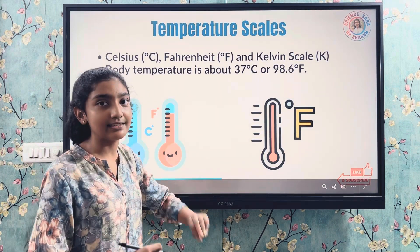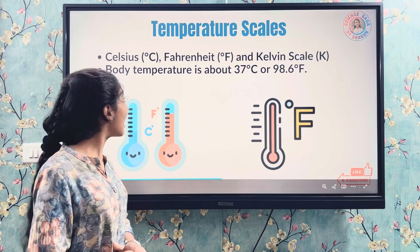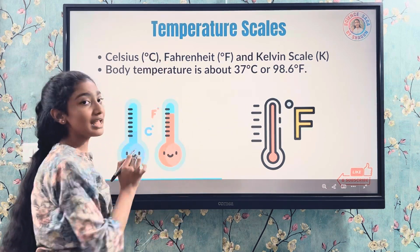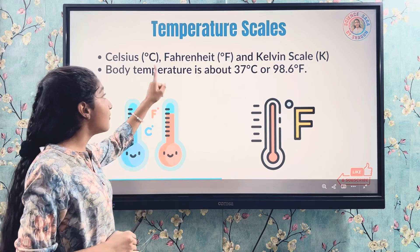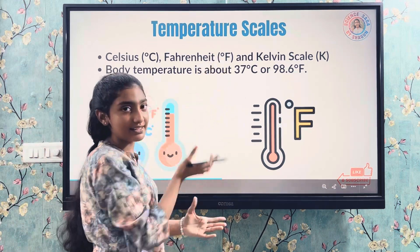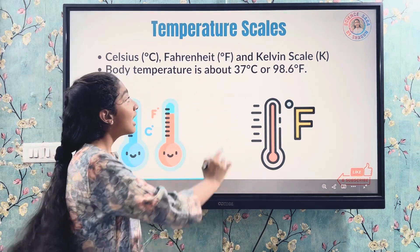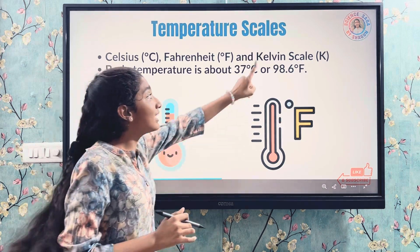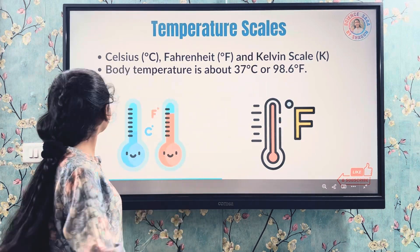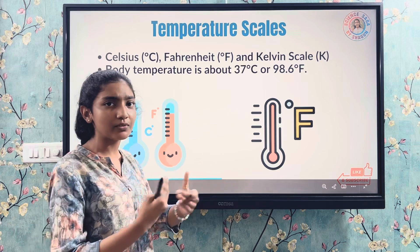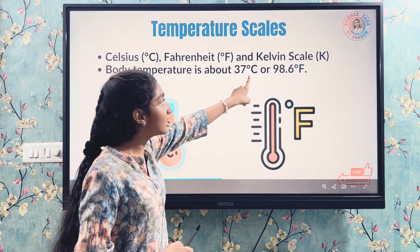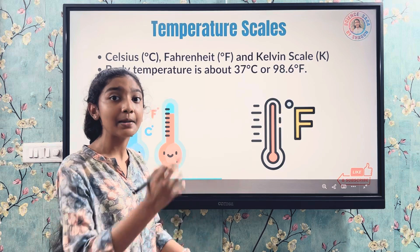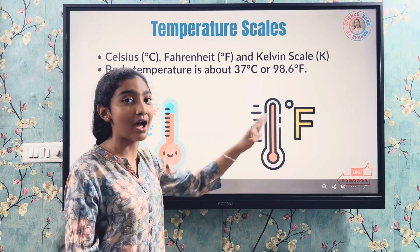There are three temperature scales: Celsius (°C), Fahrenheit (°F), and Kelvin (K — no dot, only a capital K). Body temperature is 35°C or 98.6°F — both are the same value converted into Fahrenheit.